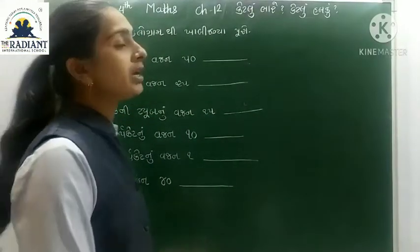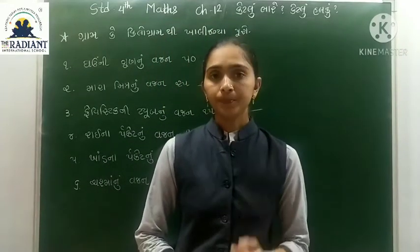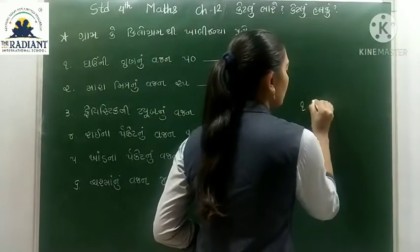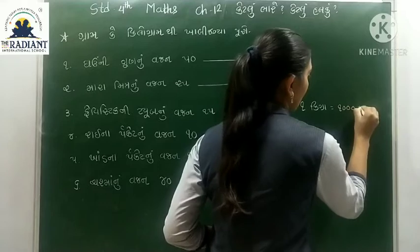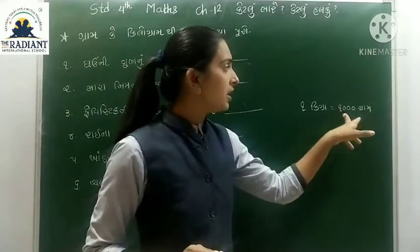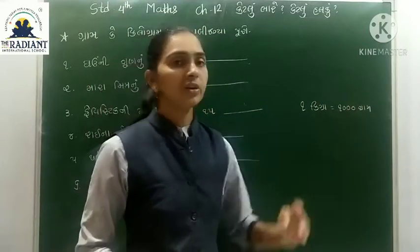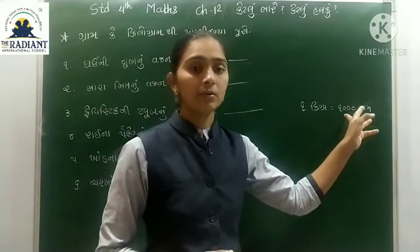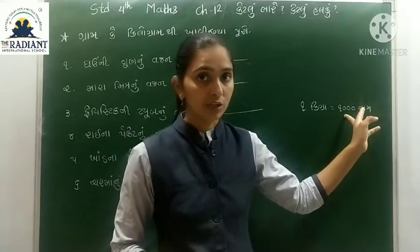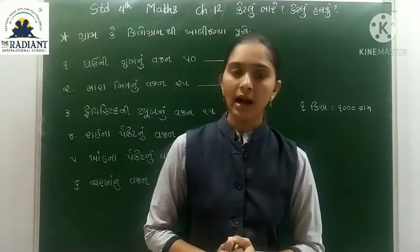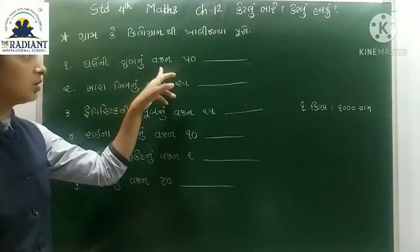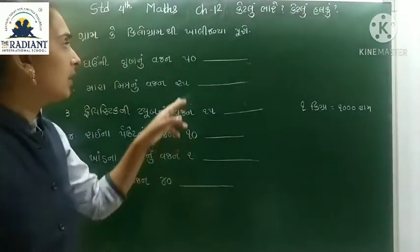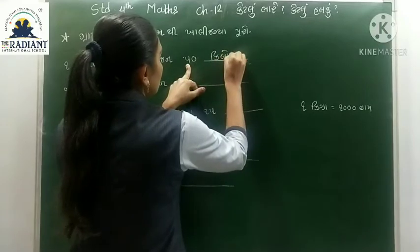હવે મિત્રો, ગ્રામ કે કિલોગ્રામ ની સમજ આપણે દોહરાવવાની છે. ખાલી છે કે કોઈ વસ્તુ નું વજન એક હજાર ગ્રામ થી વધી જાય ત્યારે આપણે એને કિલોગ્રામ માં લખીશું. ગવની ગોણ ની વાત કરીએ — નાની નહીં, મોટી હોય — ગવની ગોણ નું વજન પચાસ કિલોગ્રામ જેટલું હોય.